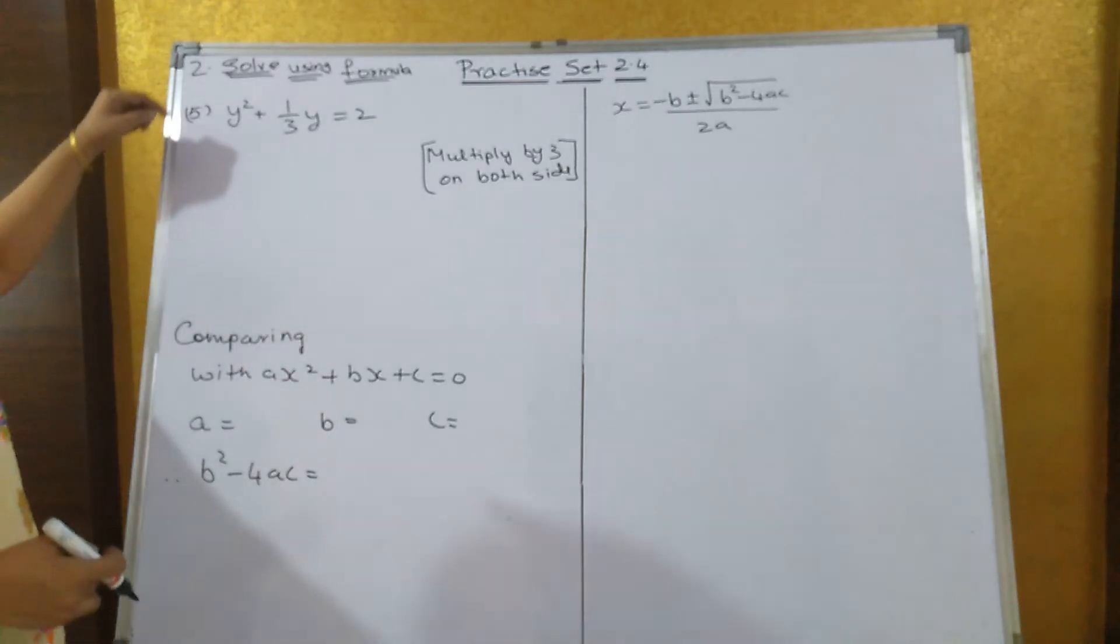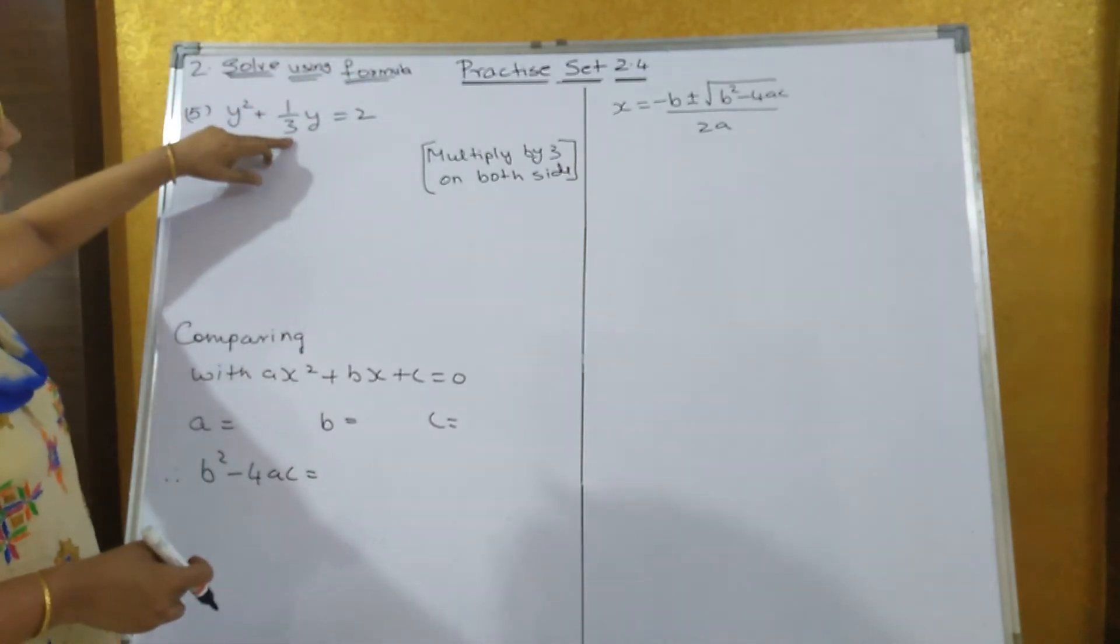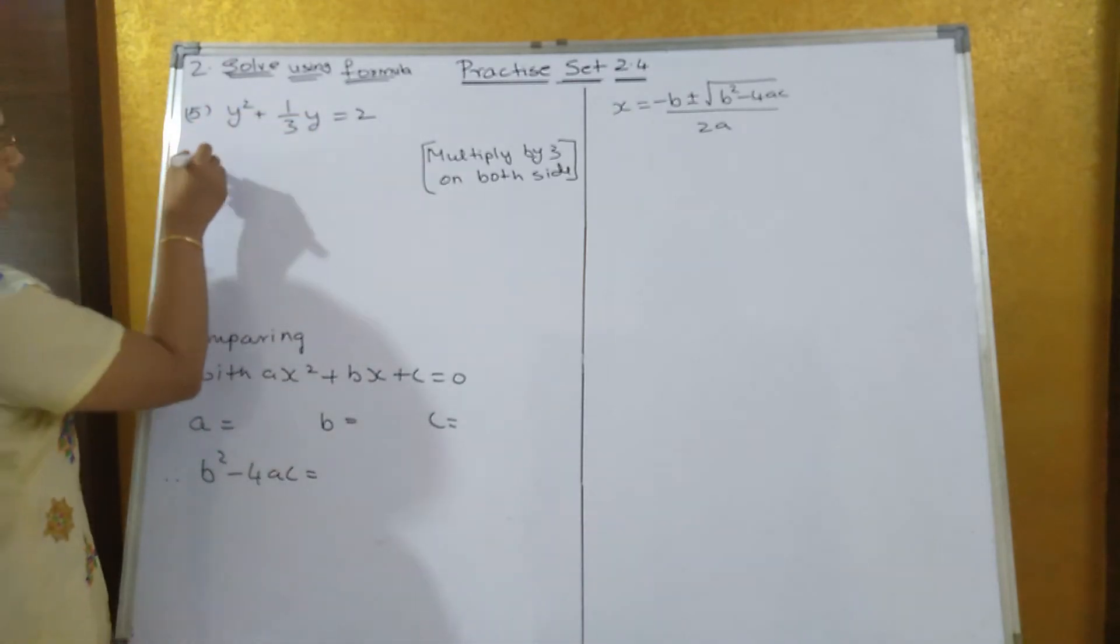The fifth sum: y² + 1/(3y) = 2. You can see in the denominator there is 3, so multiply throughout by 3 on both the sides.